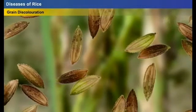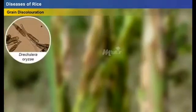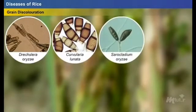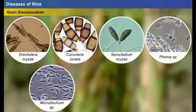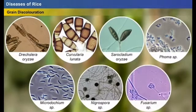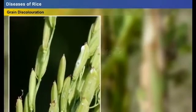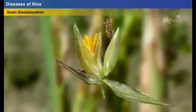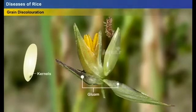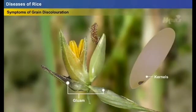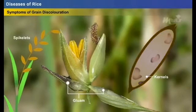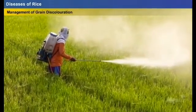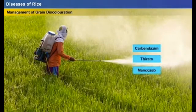Grain discoloration is a serious disease caused by a wide range of microorganisms such as Drechslera oryzae, Curvularia lunata, Sarocladium oryzae, Phoma species, Microdochium species, Nigrospora species, and Fusarium species. The grains are subjected to infection either after milk stage, after harvest, or during storage. The infection may occur externally on the glumes or internally on the kernels. Symptoms include darkening of glumes or spikelets to brown or black, and appearance of dark brown or black spots on the grains.